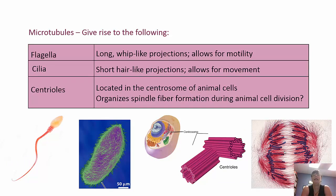Flagella are long whip-like projections used for motility. Cilia are short hair-like projections that allow movement across surfaces — the respiratory system has many cilia to keep things moving through the respiratory tract. Centrioles are found in animal cells and organize the spindle fibers during cell division.